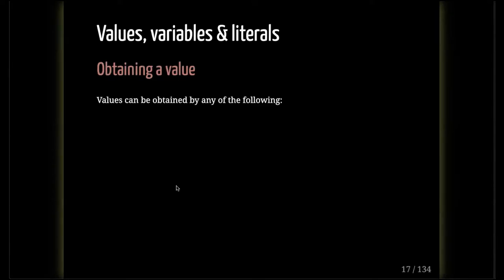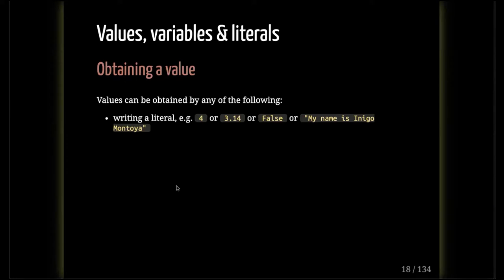Values can be obtained in several ways. You can write them literally. If you write the number 4 anywhere in a program, the Python interpreter interprets it as an integer with value 4. If you write 3.14, it's interpreted as a float. If you write true or false, it's a Boolean. If you put quotes around text, Python immediately assumes you're talking about a string. These are called literals — you're actually writing the values you want the Python interpreter to be interpreting.